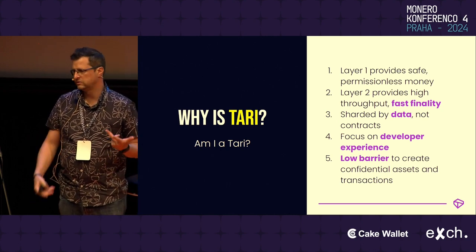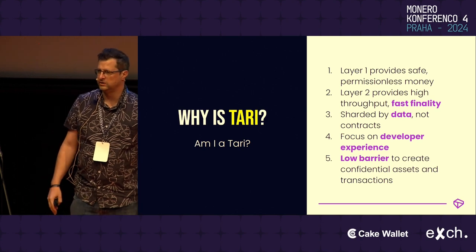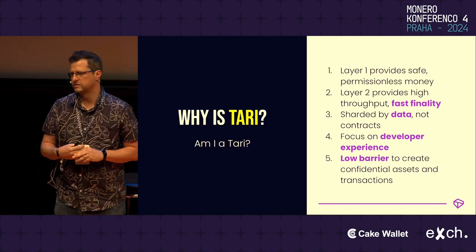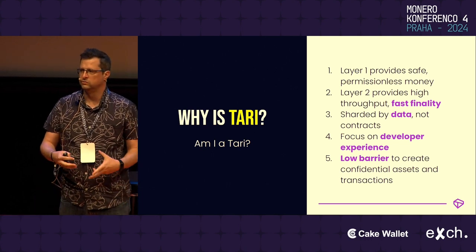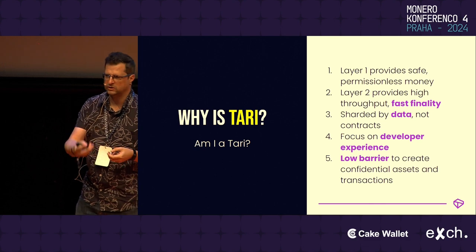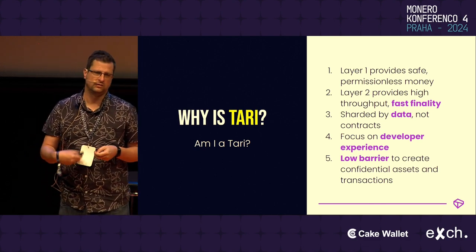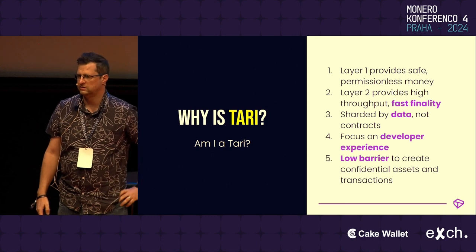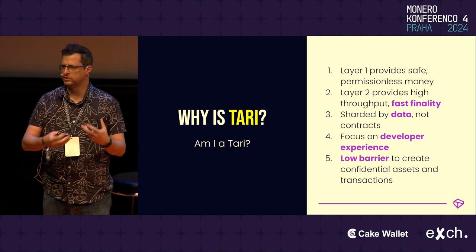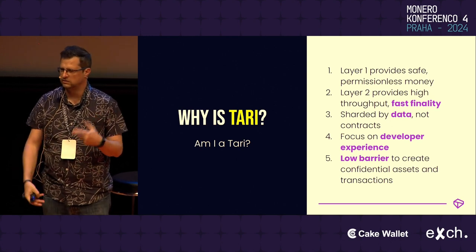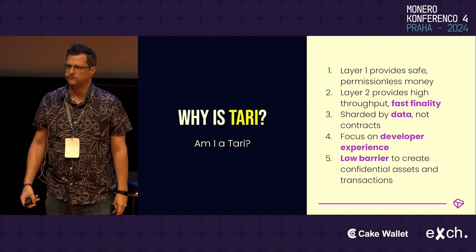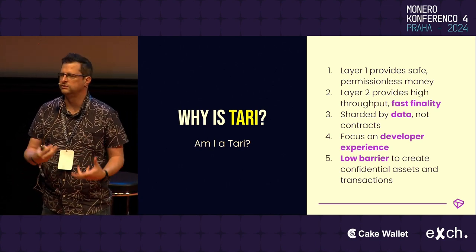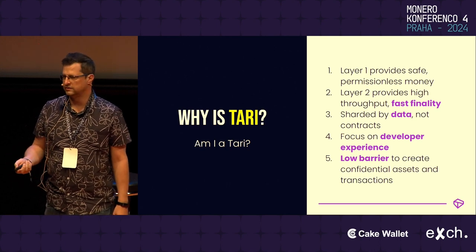So what is Tari? It's a two-layer blockchain. Layer one is proof of work, and it's based on Mimblewimble. Layer two is high throughput and sharded by data using Cerberus. So why Tari? Layer one produces safe, permissionless money using proof of work. Layer two provides high throughput with fast finality — as opposed to making block sizes bigger, you still wait about two minutes per block on layer one, but on Tari layer two we're aiming for less than 10 seconds finality across the network. It's sharded by data, not by contracts, so you can interact with multiple different contracts, DEXs, AMMs, and that kind of thing. We're very focused on developer experience — we've built an object model which makes it very easy to design and build, and we've got a very low barrier to creating confidential assets and transactions.